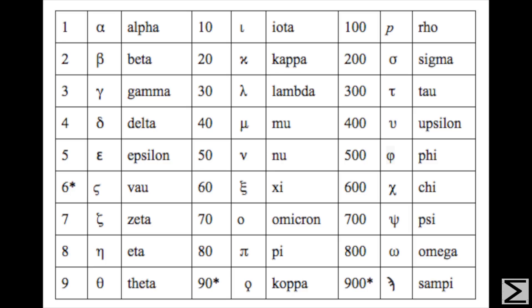This was an additive system, meaning that numbers from one to nine hundred ninety-nine could be represented by at most three symbols.